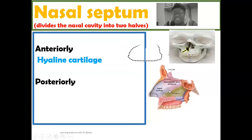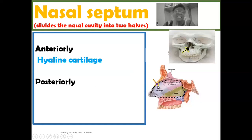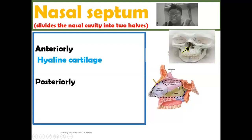Using this image, this is the configuration of the nasal septum — this is what divides the nasal cavity into two equal halves. In the anterior part highlighted in purple, you see that it is made up of cartilage, specifically a hyaline type of cartilage. Behind this space, you have the posterior compartment of the nasal septum that is made up of a bony component.